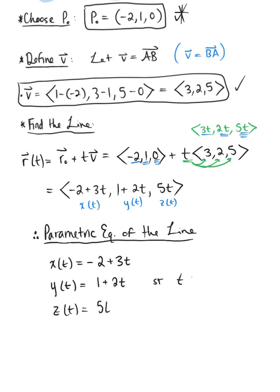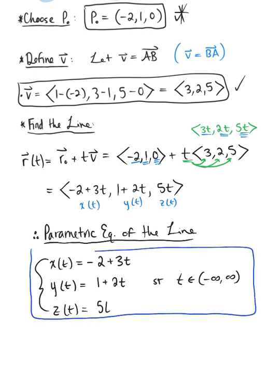And this, of course, is such that t is any real number from negative infinity to positive infinity. So this is our, this is one possible beautiful final answer. And now again, if you chose p0 to be the point b, that's still going to give you a correct answer. So just exercise caution as you practice. Multiple correct answers exist. Or in other words, this is not an exclusive solution. It is one possible solution.